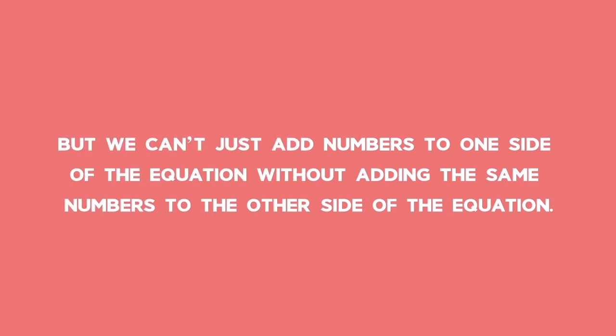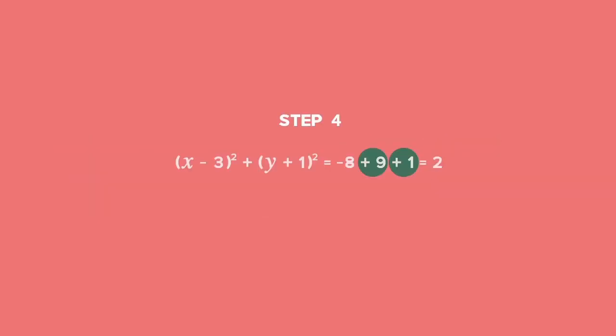But we can't just add numbers to one side of the equation without adding the same numbers to the other side of the equation. We need to add 9 and 1 to the other side of the equation to balance the equation.